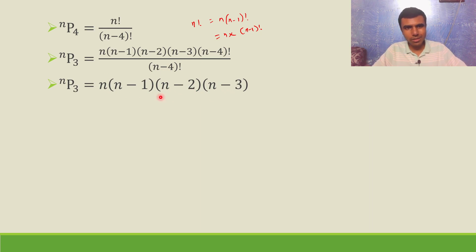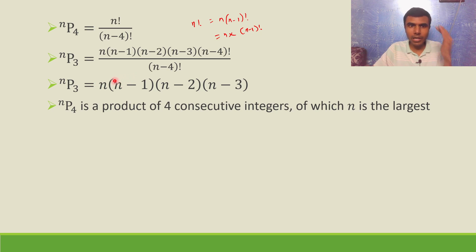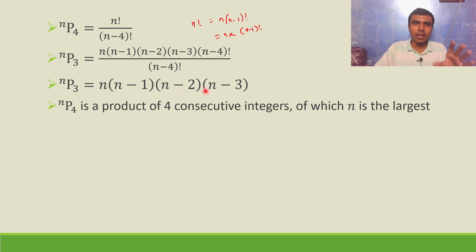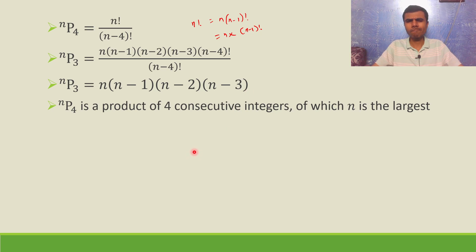This is a product of four consecutive integers. n is an integer, n minus 1 is the next integer — 1 less than n — n minus 2 is 2 less than n, and n minus 3 is 3 less than n. So there are four consecutive integers of which n is the largest.